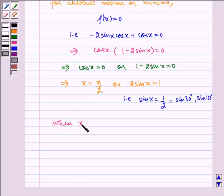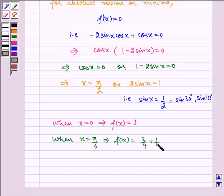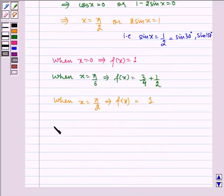Now, when x equals 0 then f(x) equals 1. When x equals π/6 then f(x) equals 3/4 plus 1/2. When x equals 5π/6 then f(x) equals 3/4 plus 1/2.